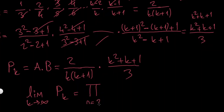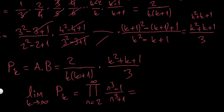So the infinite product from n=2 to infinity of (n³−1)/(n³+1) equals 2/3.